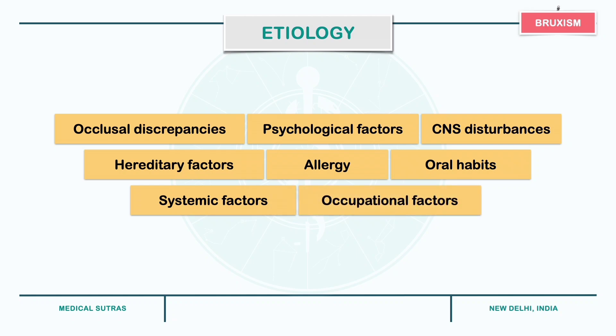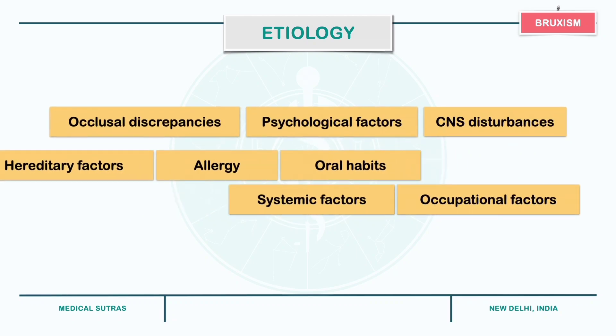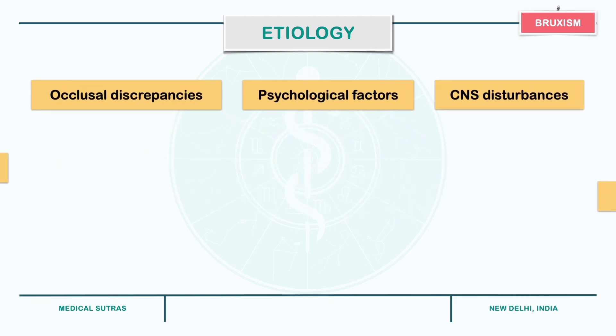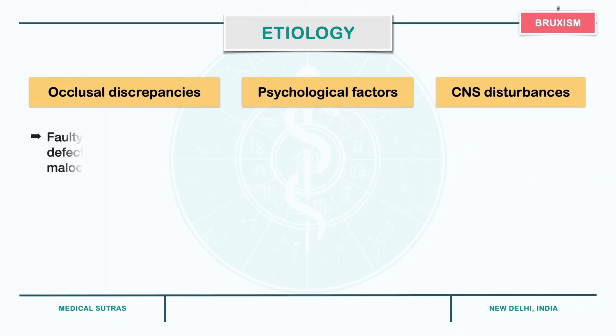Occlusal discrepancies due to faulty restoration, defective occlusal contact or mild occlusion can lead to bruxism as they alter the afferent impulses originating in the periodontium.